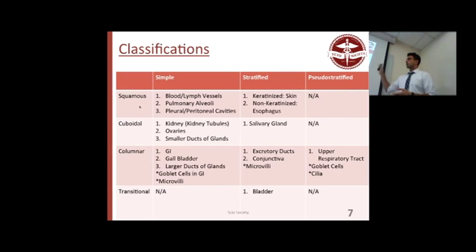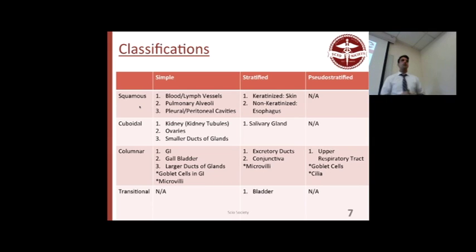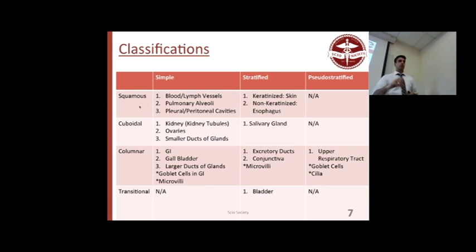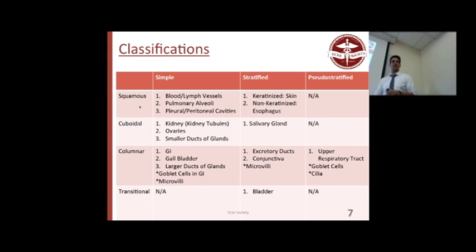Classifications: squamous — flat, nuclei kind of bulge out. Cuboidal — square, nucleus in the middle. Columnar — column-like, nucleus at the base. Transitional — those are the ones that change shape, found in your urinary bladder and urinary tract. There are different types within each: simple, stratified, and pseudostratified.